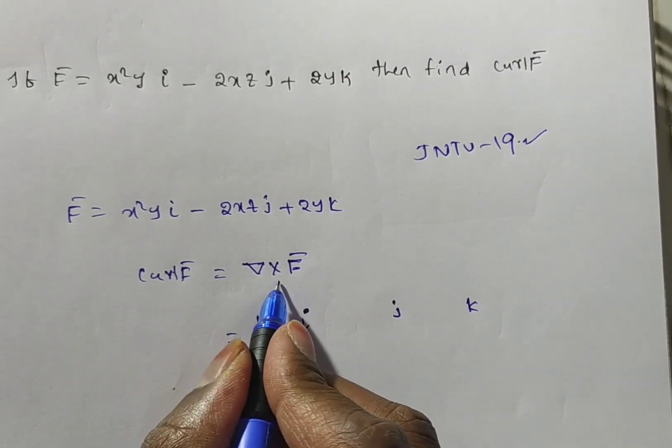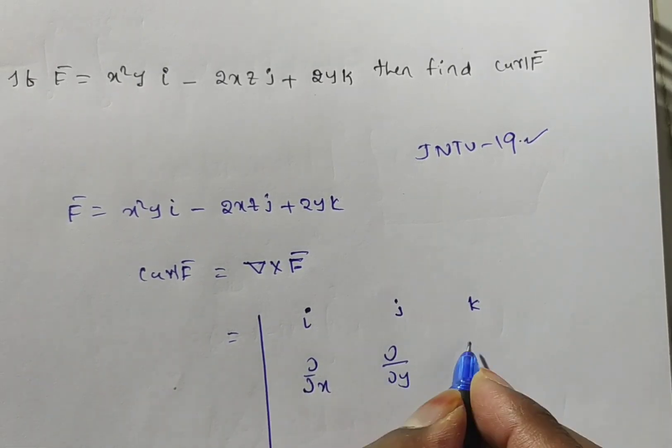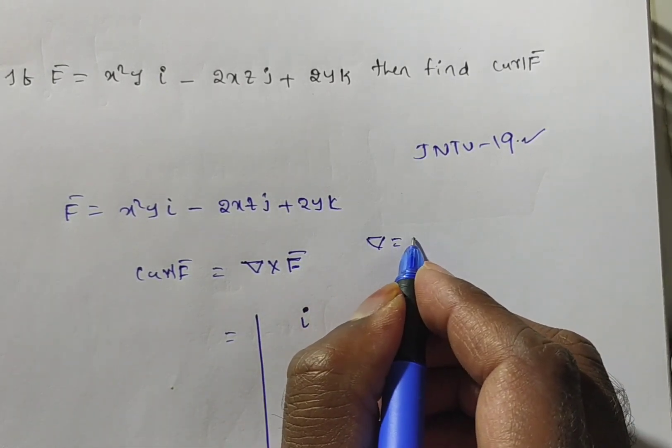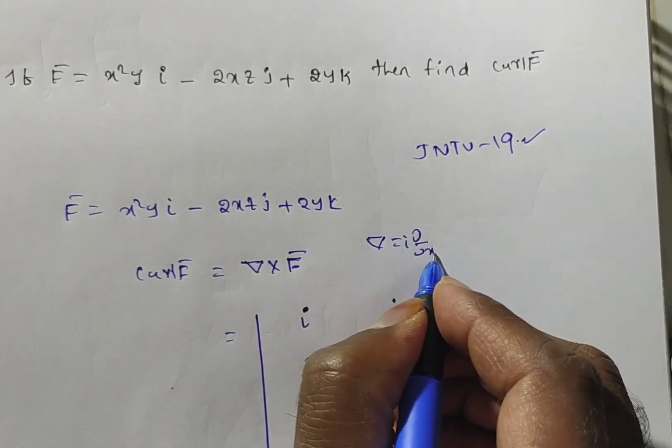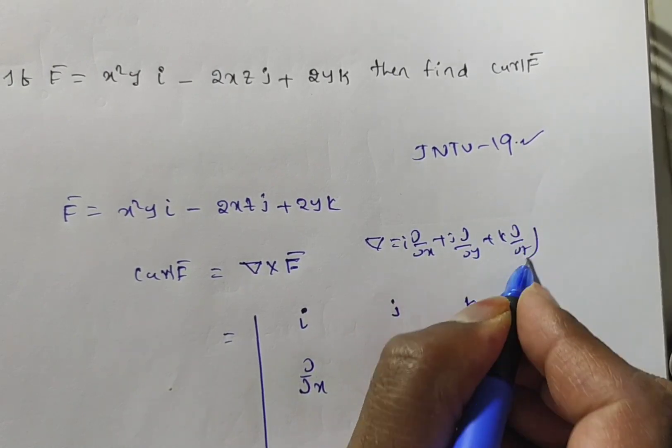Here what is the i coefficient in del? We know that del operator vector differential operator i coefficient is ∂/∂x. Now ∂/∂y, ∂/∂z. Here I will write you see del is nothing but i into ∂/∂x plus j into ∂/∂y plus k into ∂/∂z, right.